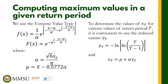Finally, how do we compute the maximum values given a return period? We use the Gumbel distribution, the Extreme Value Type 1. The CDF F(x) is given, and we have formulas for alpha and mu. To determine the values of x sub t — the maximum value for various return periods T — it is convenient to use the reduced variate y sub t, computed as: y sub t = negative ln of ln(T / (T minus 1)). Then the maximum value is x sub t = mu plus alpha times y sub t.